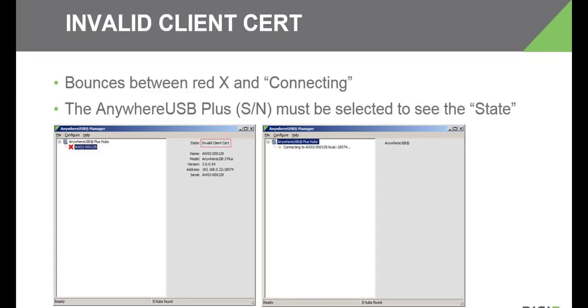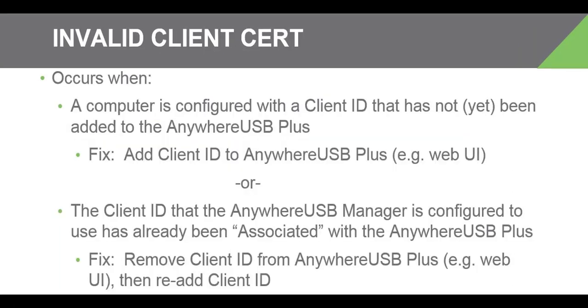If you can discover the Anywhere USB Plus but it has a red X icon next to it and the state at the top right says "invalid client cert," follow these troubleshooting steps.